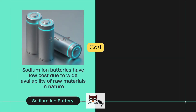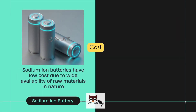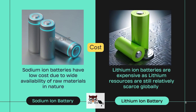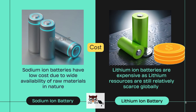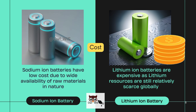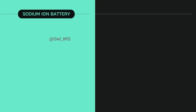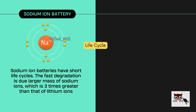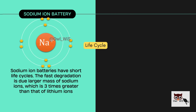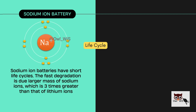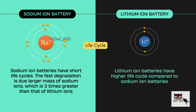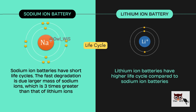Sodium ion batteries have low cost due to the wide availability of raw materials in nature, whereas lithium ion batteries are expensive as lithium resources are still relatively scarce globally. Sodium ion batteries have shorter life cycles — the fast degradation is due to the larger mass of sodium ions, which is three times greater than that of lithium ions — whereas lithium ion batteries have a higher life cycle.